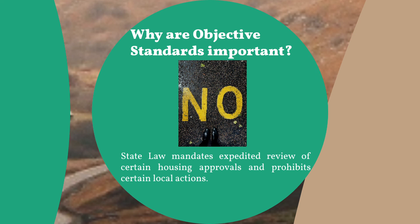Our ability to limit the number of approvals or construction permits for housing, cap the number of housing units we have, limit the population, or adopt subjective standards are also prohibited. If it seems like local discretion is being curtailed, that's because it is.